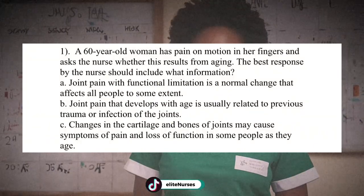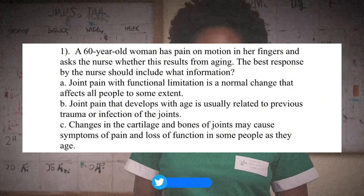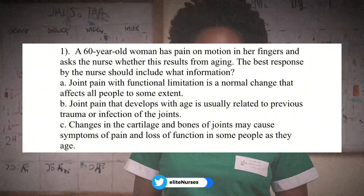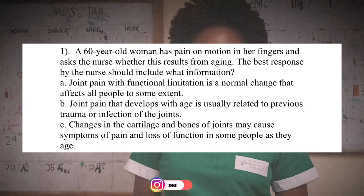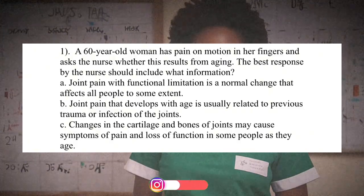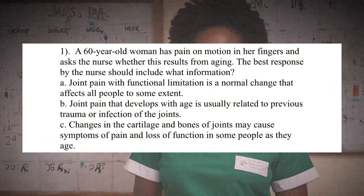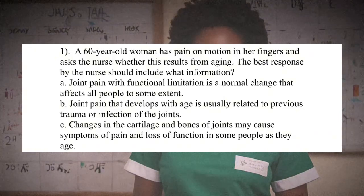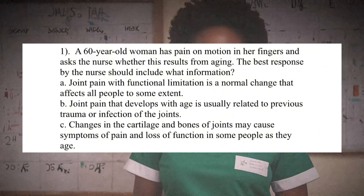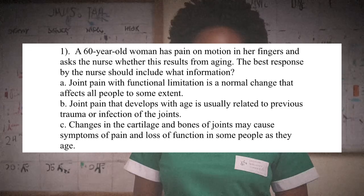Question 1: A 60-year-old woman has pain on motion in her fingers and asks the nurse whether this results from aging. The best response by the nurse should include what information? A. Joint pain with functional limitation is a normal change that affects all people to some extent. B. Joint pain that develops with age is usually related to previous trauma or infection of the joints. C. Changes in the cartilage and bones of joints may cause symptoms of pain and loss of function in some people as they age.